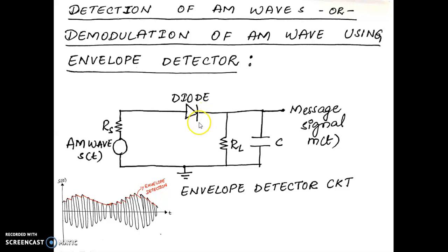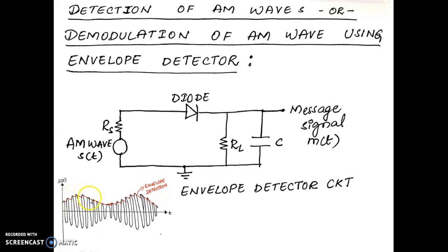This is the circuit diagram for detecting the modulating signal from an amplitude modulated waveform, which uses a diode and a resistor-capacitor network. The black waveform is the standard AM signal, and the red one is the envelope of this AM signal. You can trace the envelope, which actually represents the modulating signal — that's why the name envelope detector.